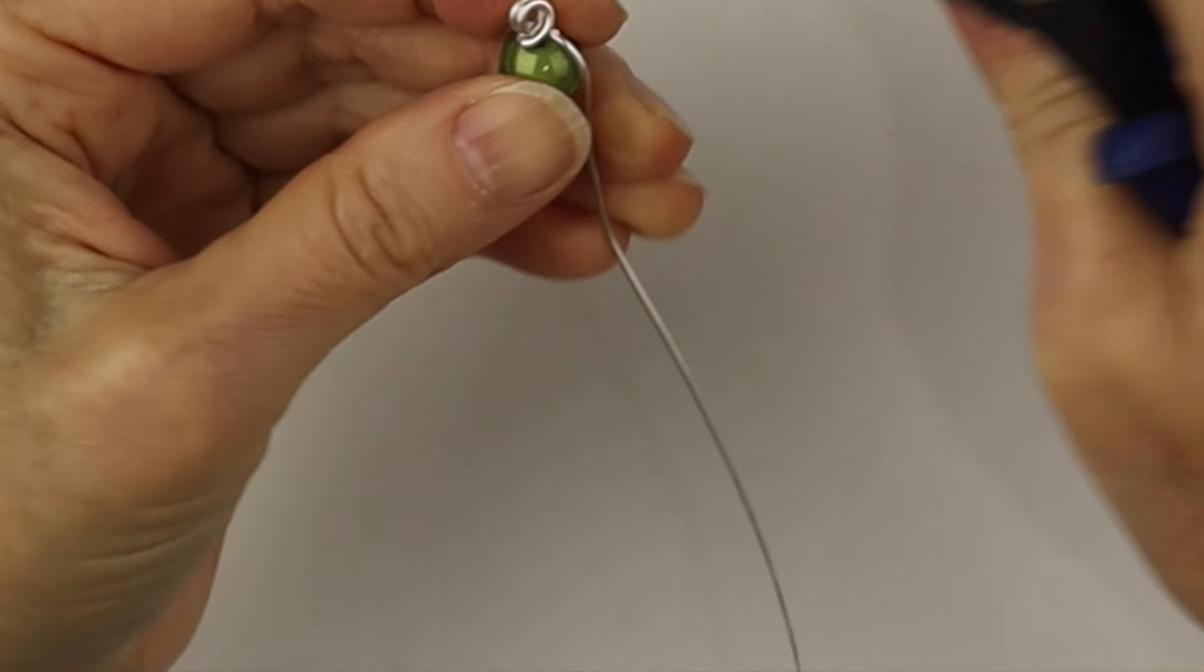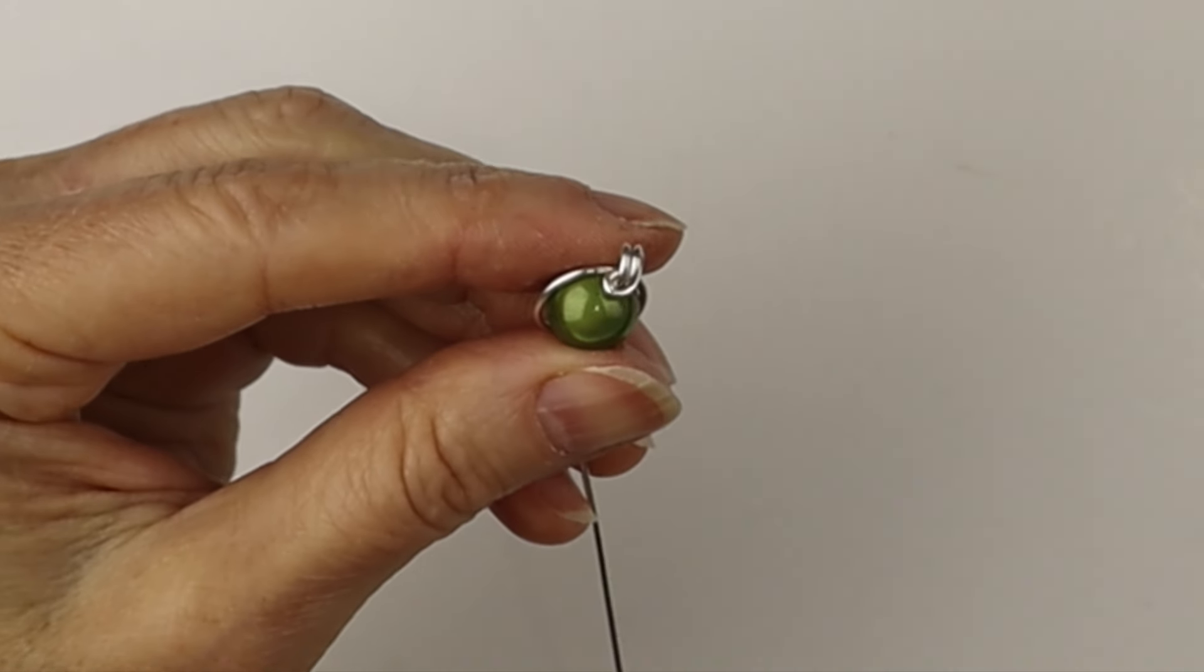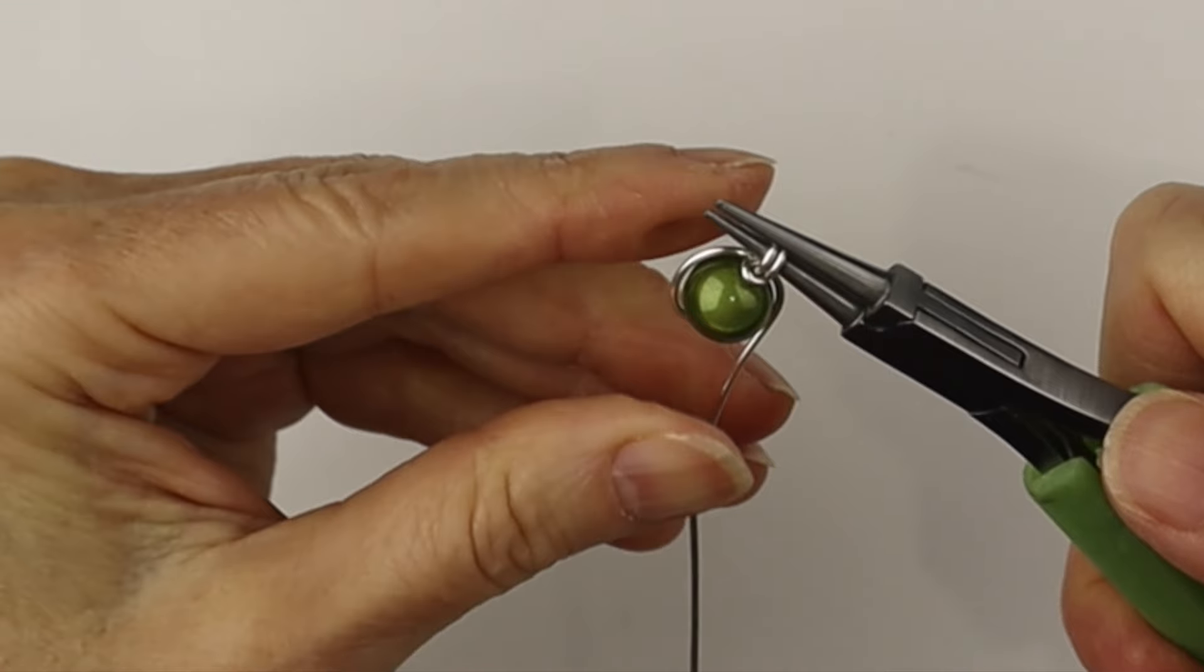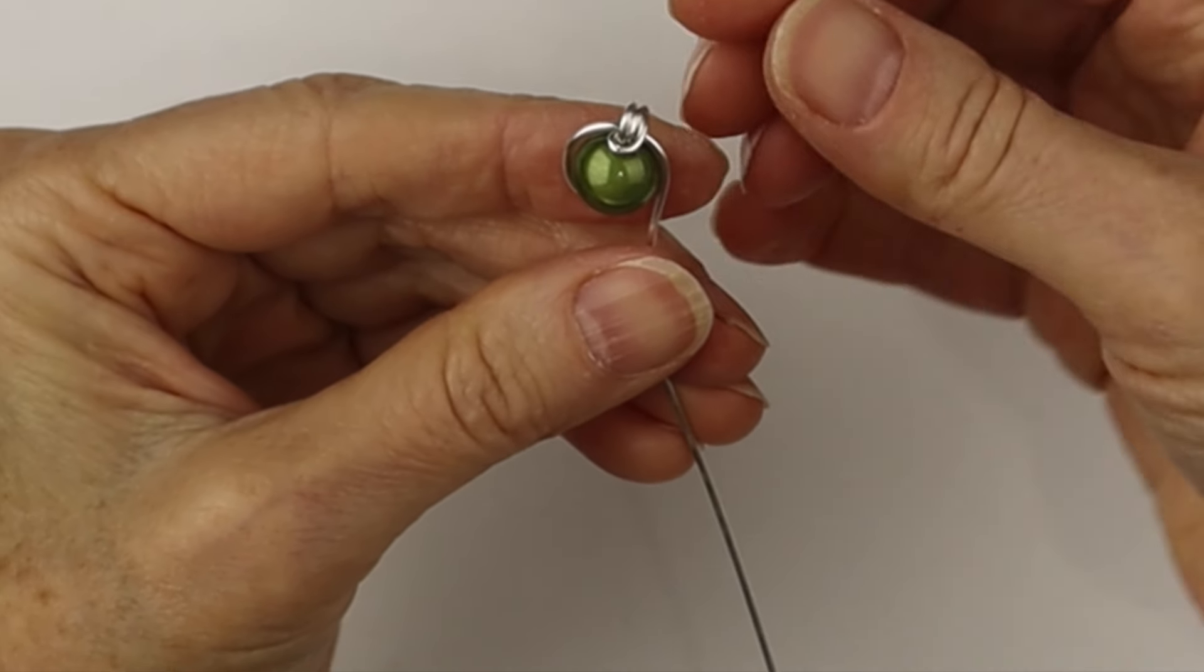Remove the pliers and get the nipper tool or your flush cutters to clip that end, and then we'll get our round nose pliers just to adjust the loop a little bit.